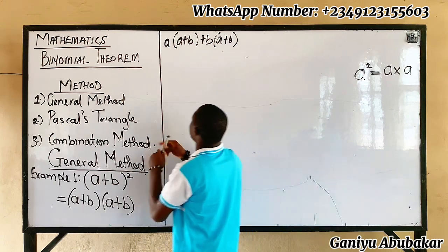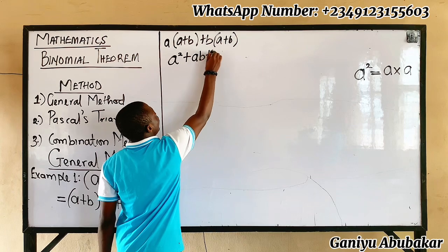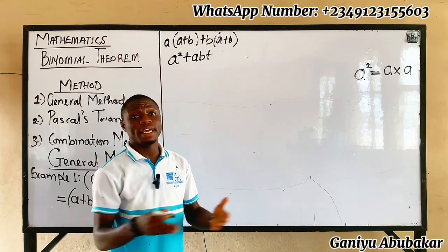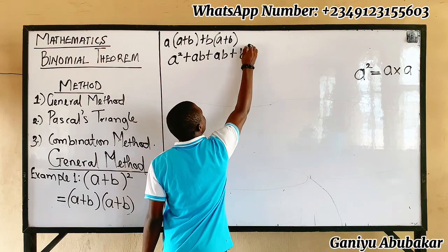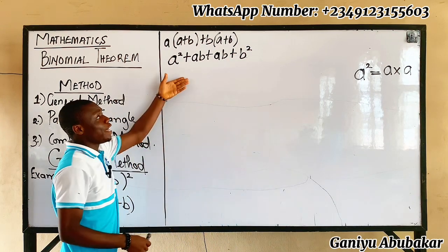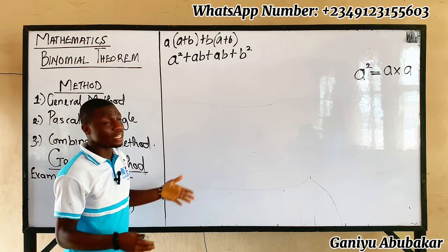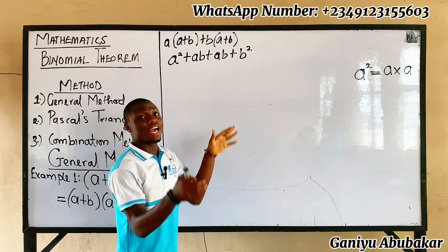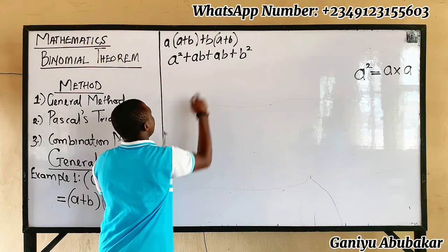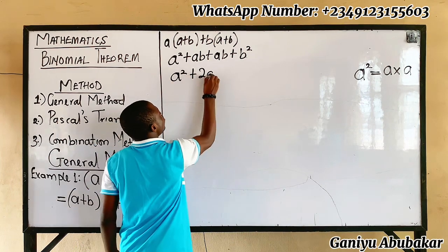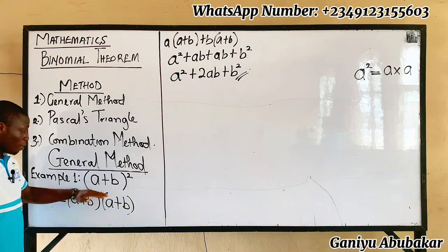So: a × a gives a², plus a × b gives ab; then b × a gives ab (written in alphabetical order as ab), plus b × b gives b². I can't leave the answer in this form because I see like terms — ab and ab. Adding them gives 2ab. So the final answer is a² + 2ab + b².